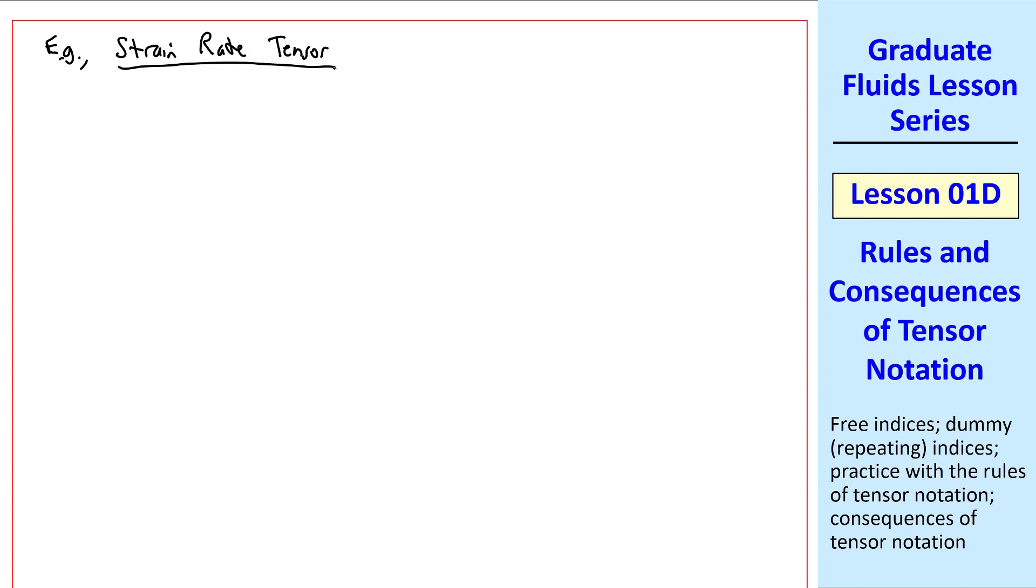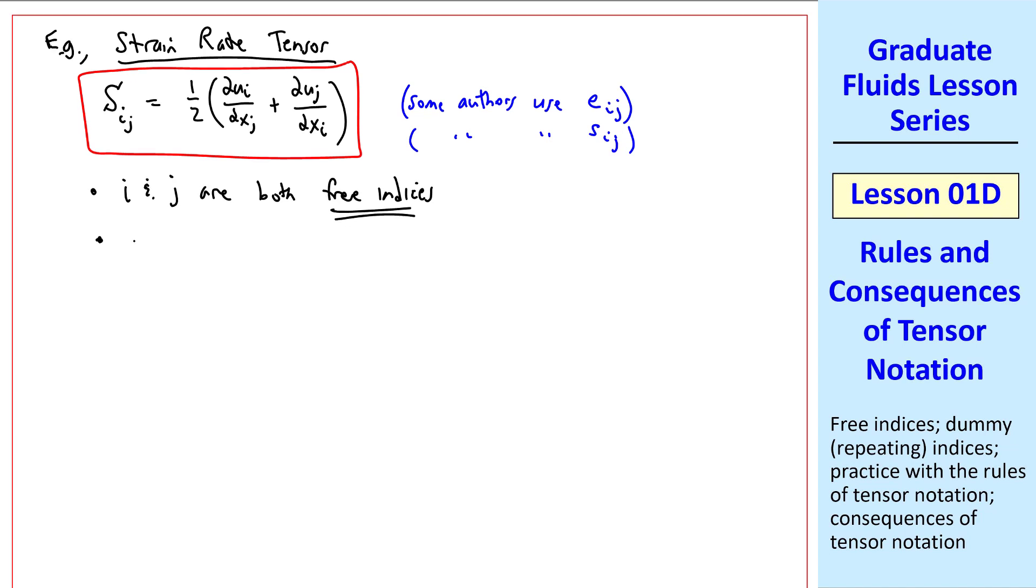Another example is the strain rate tensor, which we'll discuss in more detail later. We use capital Sij. It's defined as 1 half del ui del xj plus del uj del xi. I note that some authors use eij instead of Sij, and other authors use a lowercase s. Looking at this equation, i and j appear only once in each of these three terms. Therefore, i and j are both free indices. As with the previous example, this equation represents nine components. When you see this equation, you should be thinking that we're really writing the components of the tensor, not really the tensor itself. But in our minds, when we see Sij, or we see this, we recognize this as a second-order tensor.